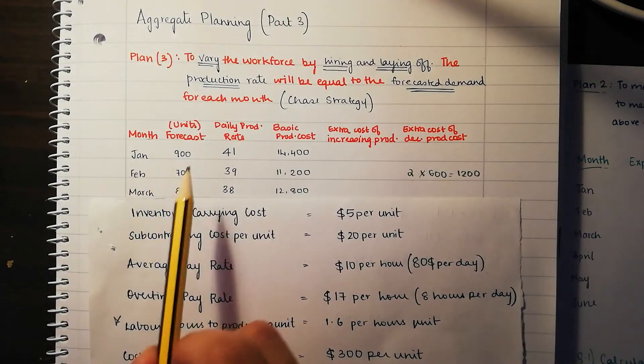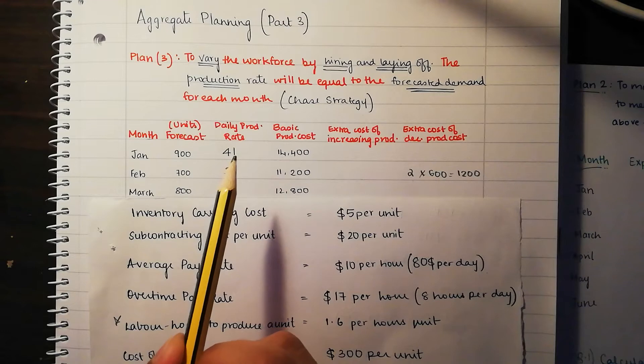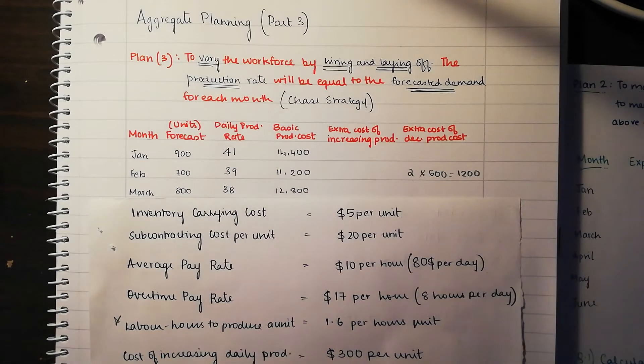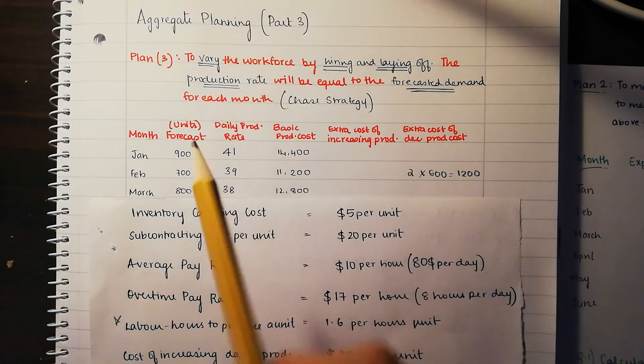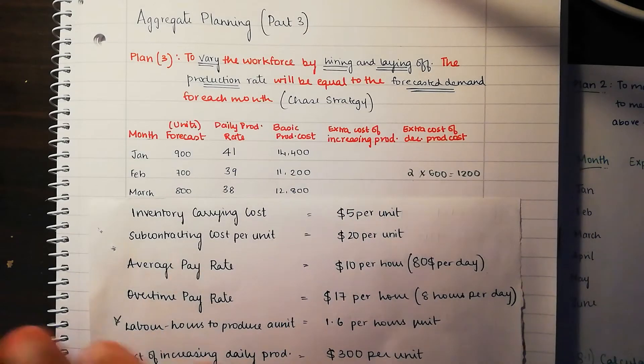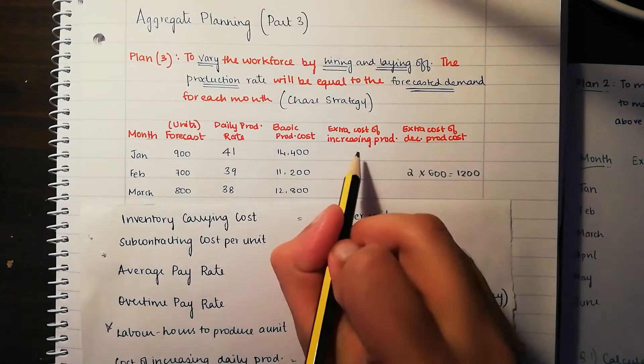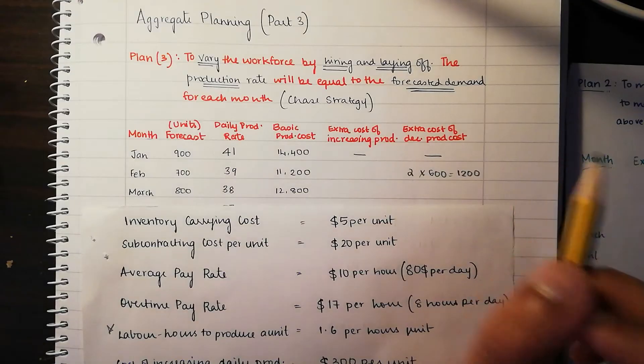Let's just look at Jan. What are we doing in Jan? In Jan, we are assuming that there is no change in production from the previous month that is in December. There is no change happening, so we don't have to do anything. That's just going to be no.